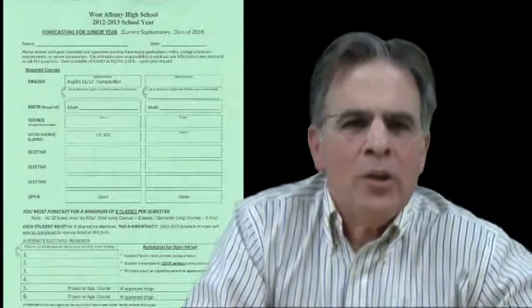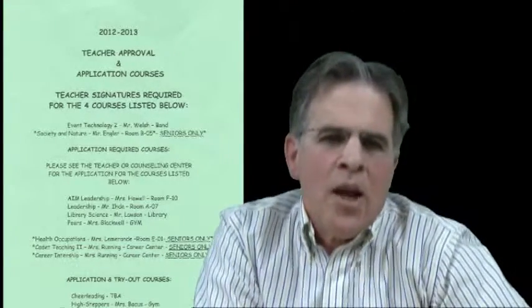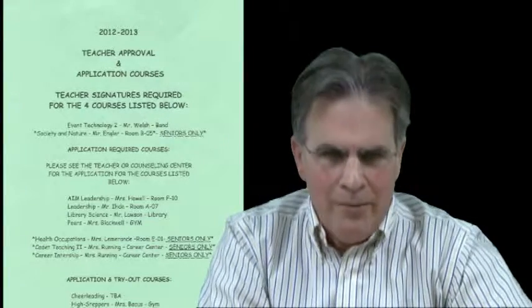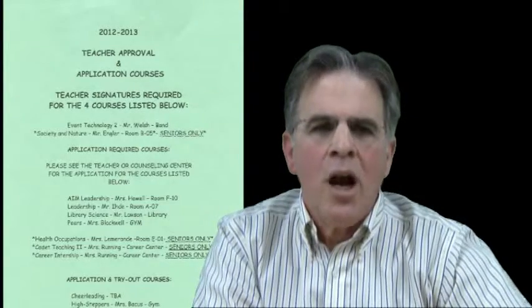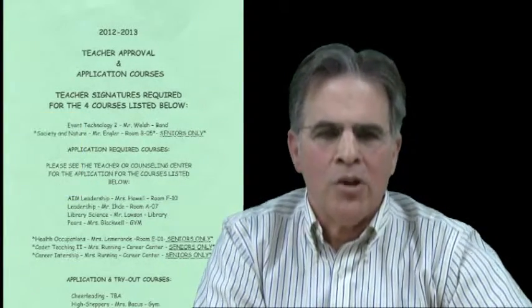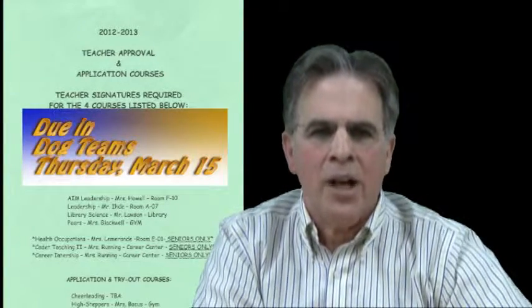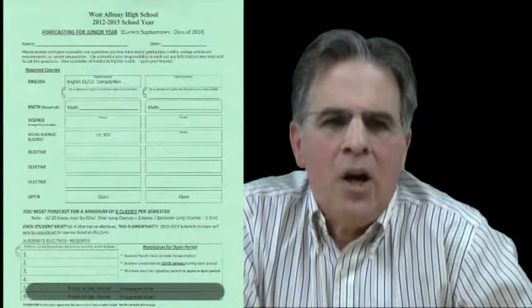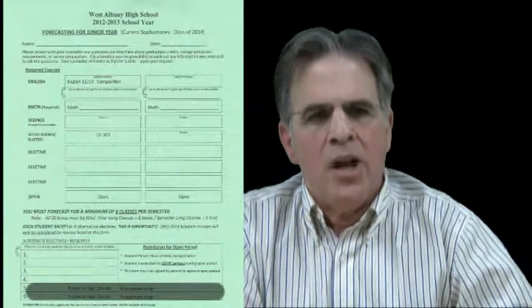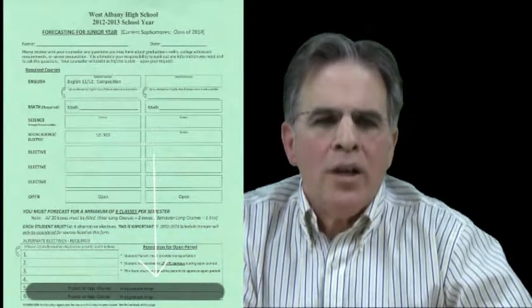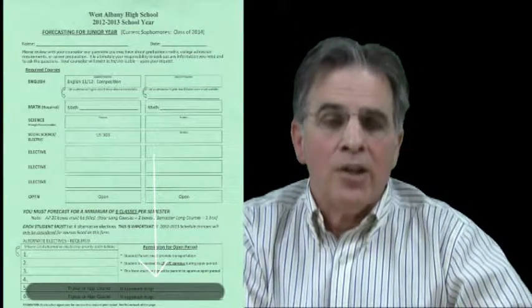We have courses that require teacher's approval by signature, or application only. Please see the reverse side of the forecasting form for a list of these courses. If you are attempting to get a class that requires an application, or trying out for cheerleading or the dance team, there are some additional steps to complete. Please go to the teacher to get the application required or to get information about the requirements for tryouts. Completed applications must be turned in with your forecasting form no later than March 15th. On your forecasting form, list the class you are applying for, or a class that involves tryouts or selections, in elective box number 5 or number 6 as one of your alternatives on the bottom of the form. In the 'if approved' drop box, please indicate which elective from the top of your page you would drop if you are selected for the application or tryout class.